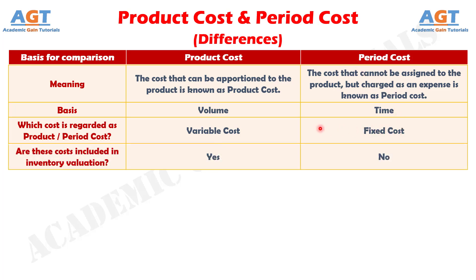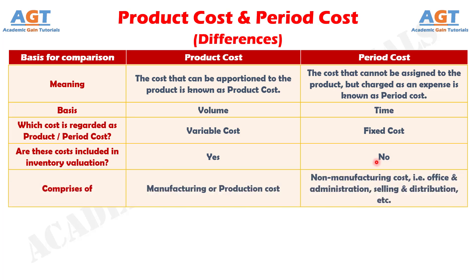Number 4: product cost is included in inventory valuation, which is just opposite in the case of period cost. Number 5: product cost comprises of manufacturing or production cost, whereas period cost comprises of non-manufacturing cost — that is, office and administration, selling and distribution, etc.